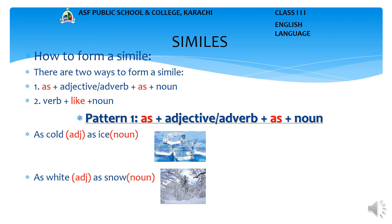Pattern number 1: As + adjective or adverb + as + noun. Example 1: As cold as ice. In this phrase, 'cold' is an adjective and 'ice' is a noun. This simile uses the word 'as' to compare cold and ice. Example 2: As white as snow. Here 'white' is an adjective and 'snow' is a noun, compared using the word 'as'.